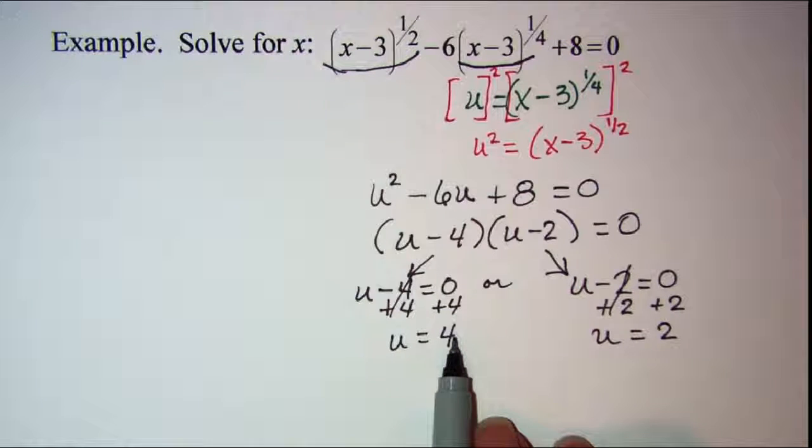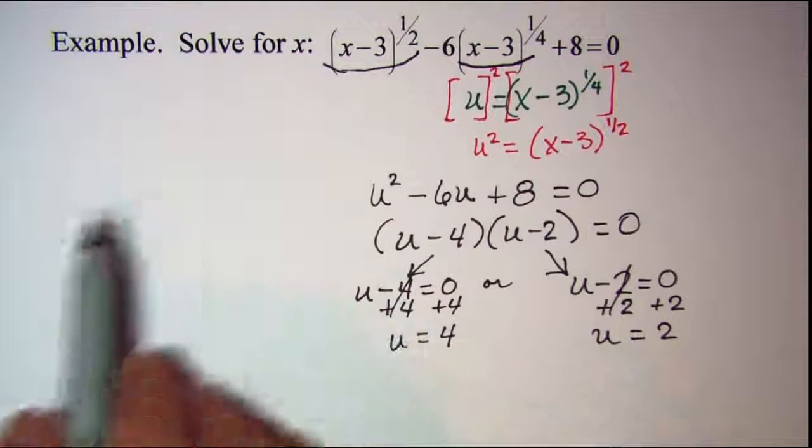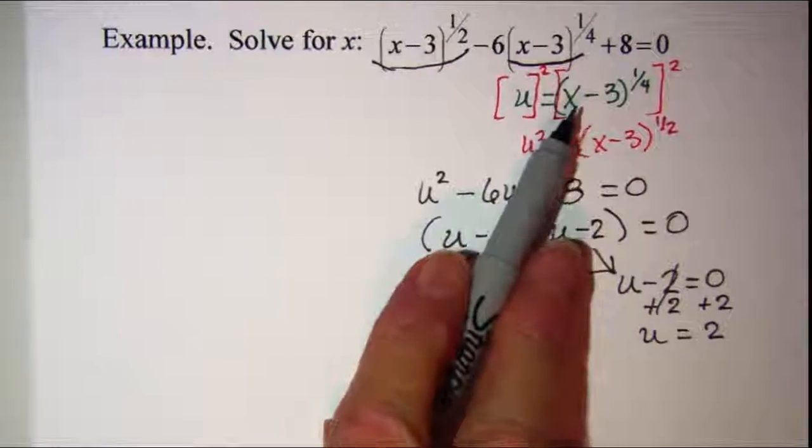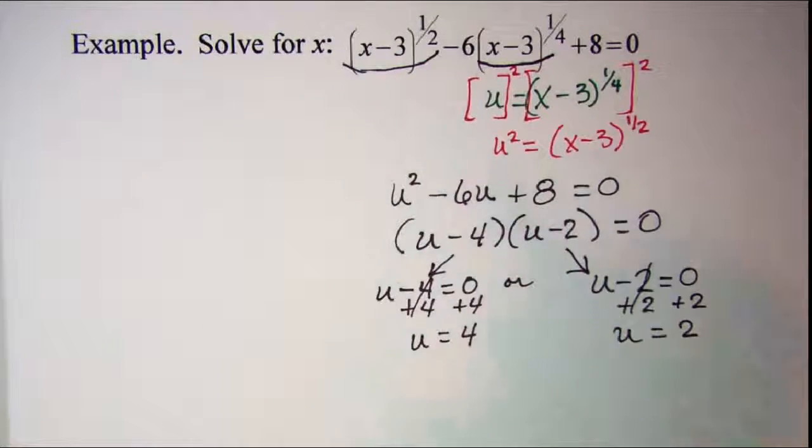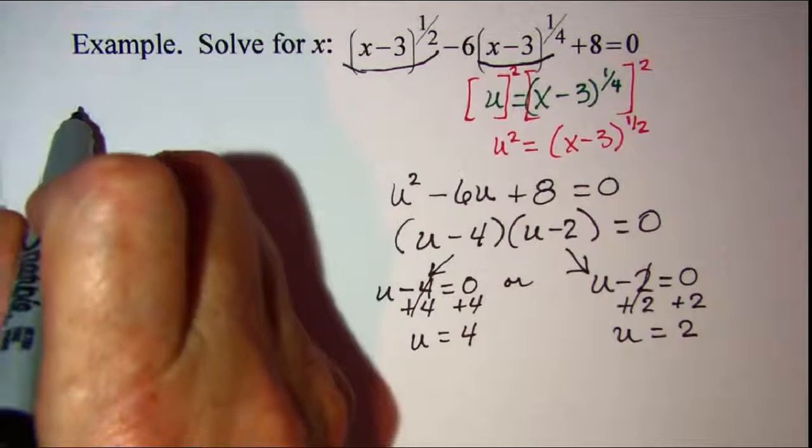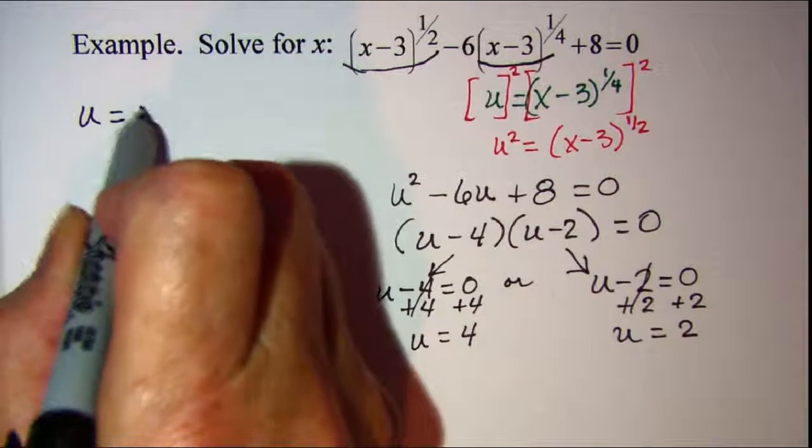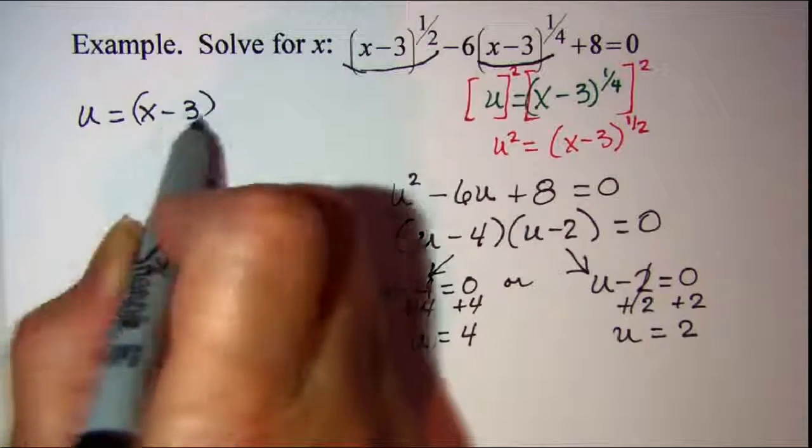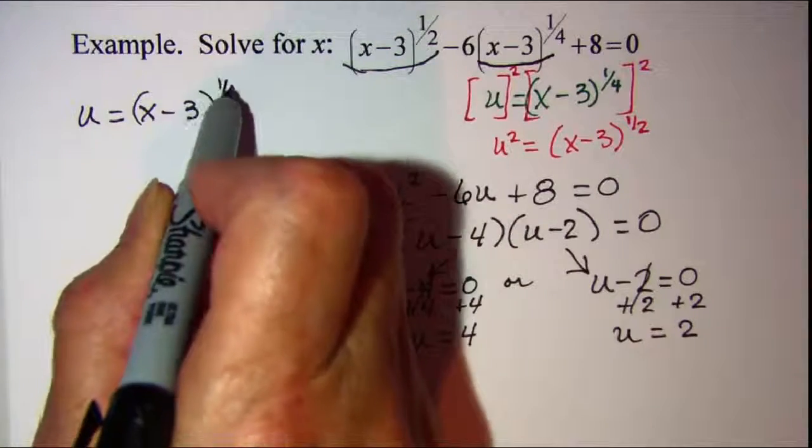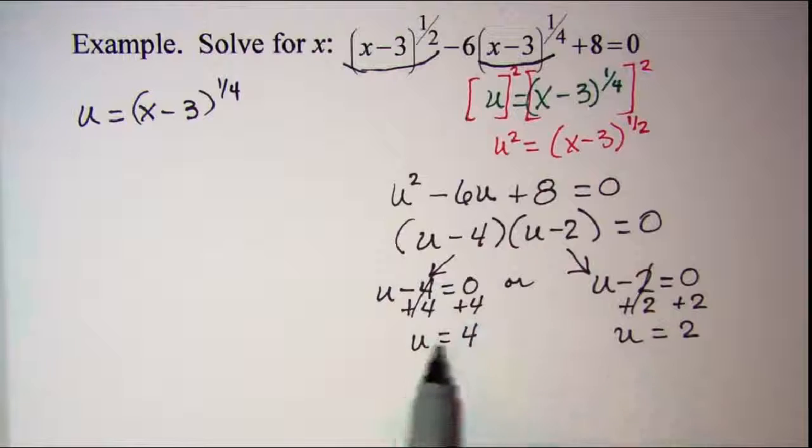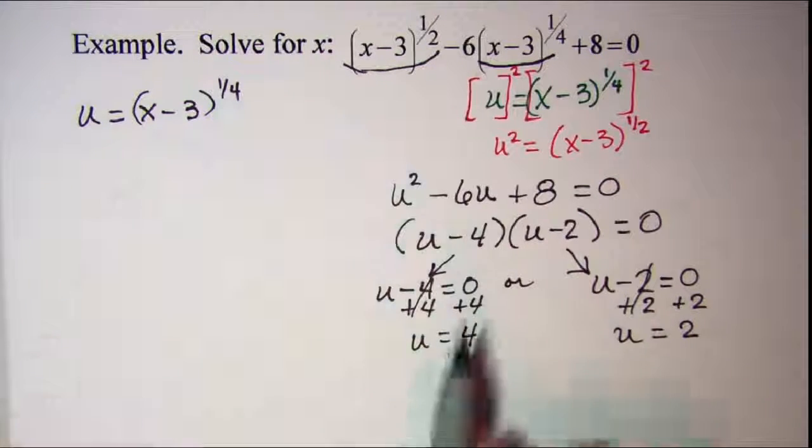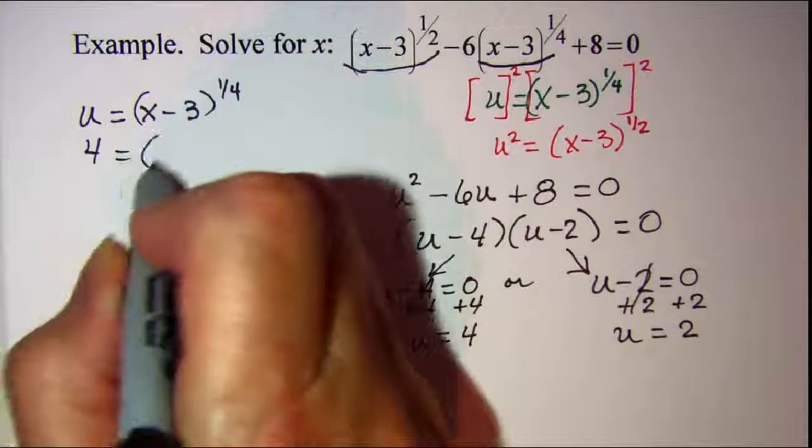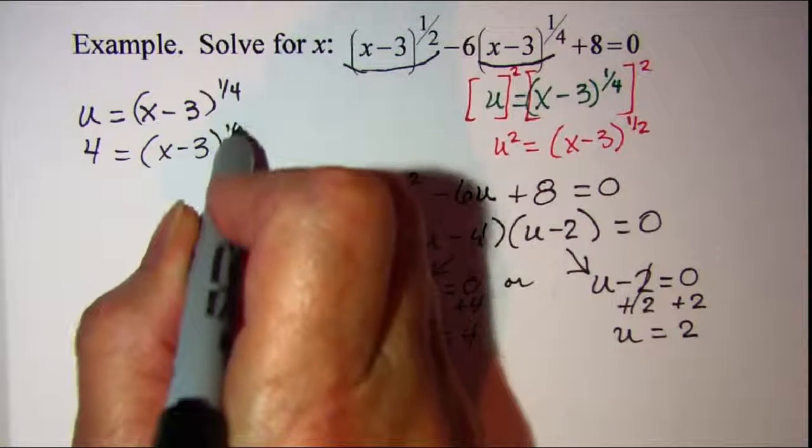Now I have a value for u, but I know that u is this substitution here. So let me go back and put that in. I know that u equals x minus three to all of that quantity raised to the one-fourth power. So u I know is four. Let's do this one first. So four equals x minus three to the one-fourth power.